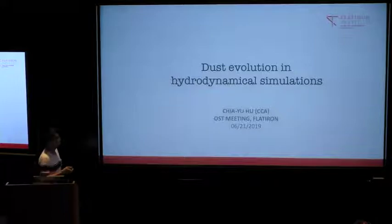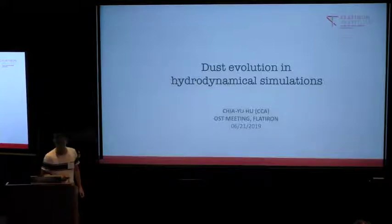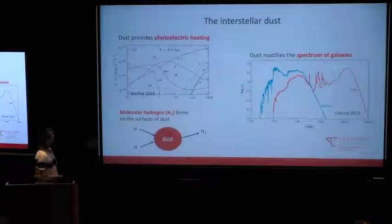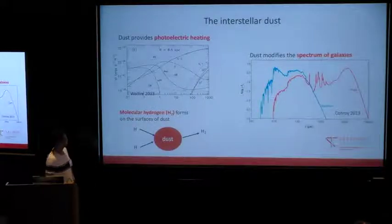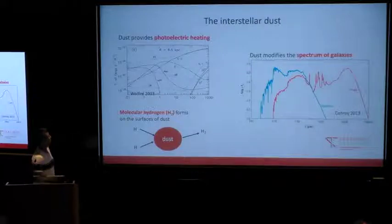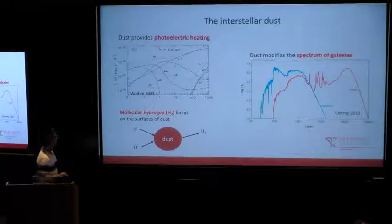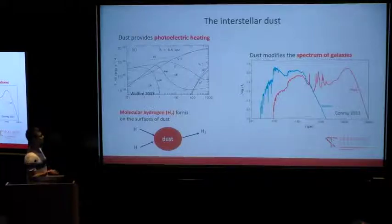Today I'm going to talk about how simulations follow dust's evolution. We already heard several talks about the importance of interstellar dust. It provides a very important heating mechanism in the ISM — the so-called photoelectric heating by interacting with stellar UV radiation, which is actually the most important heat source in most typical spiral galaxies.